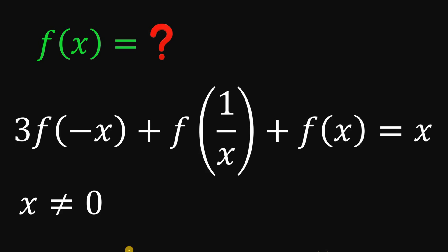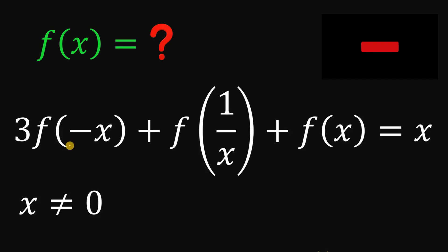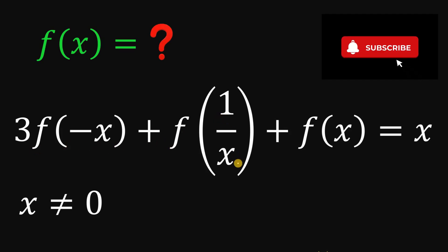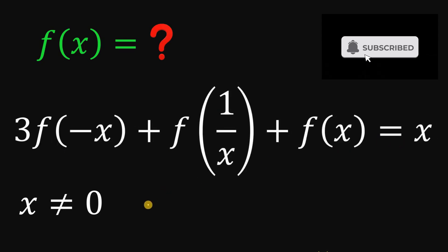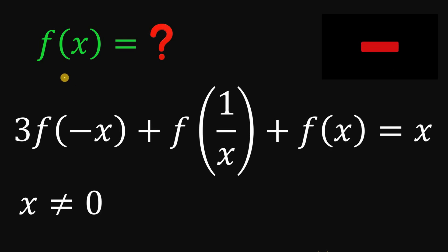Can you solve this math challenge? Here's the question. Given this functional equation: 3 times f of negative x, plus f of 1 over x, plus f of x equals x, wherein x is not equal to 0. The goal is to find the value of f of x.